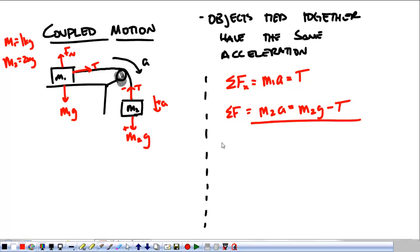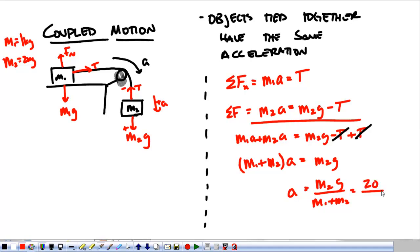Mathematically, we're going to add these two equations together. M1a plus M2a equals M2g minus t plus t. Our t's go away. I've got M1 plus M2 times A equals M2g. My acceleration is M2g over M1 plus M2. Plug our numbers in. 20 over 3. 6.67 meters per second squared. That's the hard way because we're creating these equations.